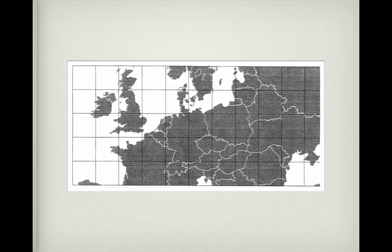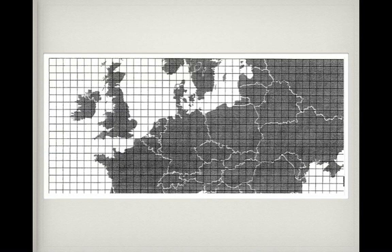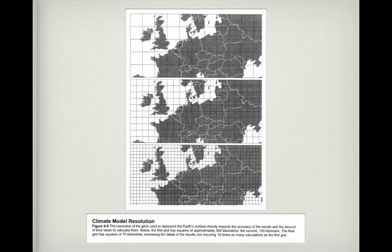This slide is a picture of one of the earlier climate models and how it's spaced out. This is a more complex model, which is more accurate and in higher resolution. And then this is a more modern setup, so it's going to be most accurate. As you can see, the first grid has squares of about 300 kilometers, the second 150, and the final one 75. However, the final model requires 16 times as many calculations as the first grid, because there are 16 of those smaller squares inside one square of the first diagram.